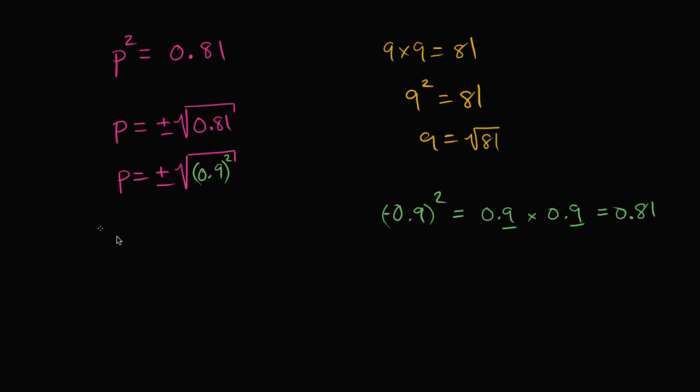So this is going to be p is going to be equal to plus or minus 0.9. Or we could write that p is equal to 0.9, or p could be equal to negative 0.9. And you can verify that—you square either of these things, you get 0.81.